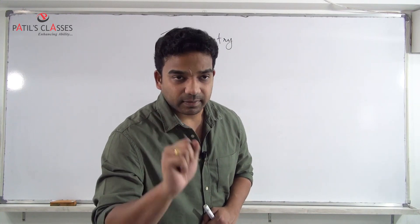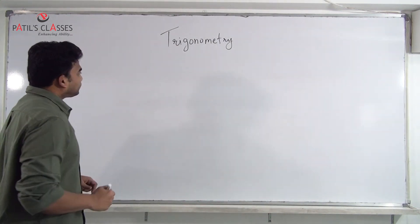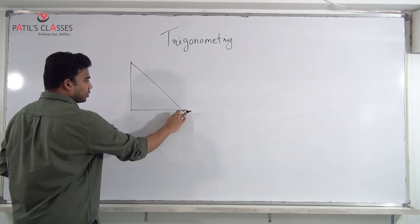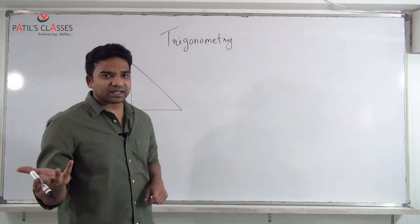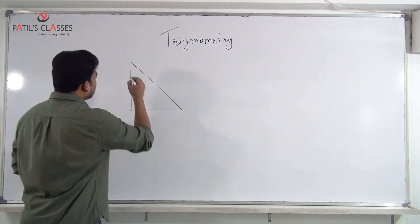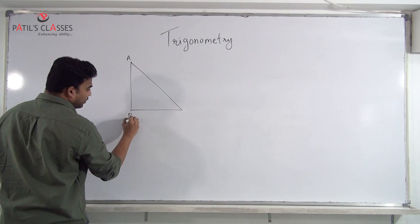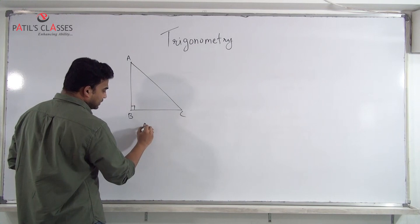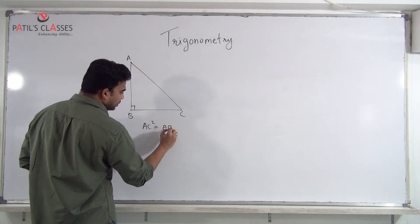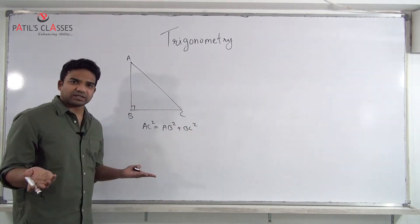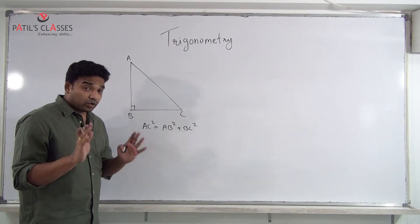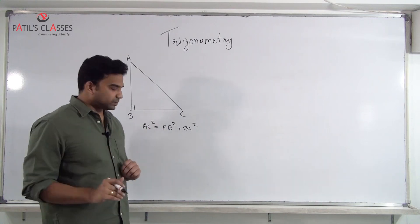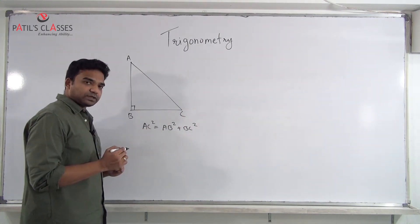In a right angle triangle, Pythagoras theorem states: if we have triangle ABC right angled at B, then AC² = AB² + BC². This is a revision — AC squared is equal to AB squared plus BC squared.